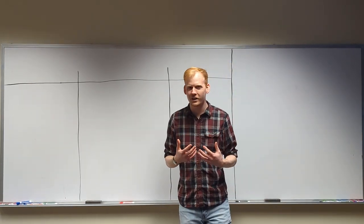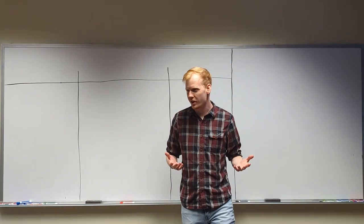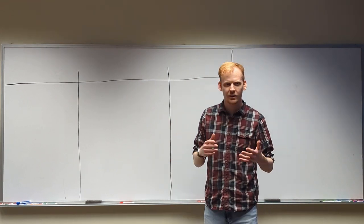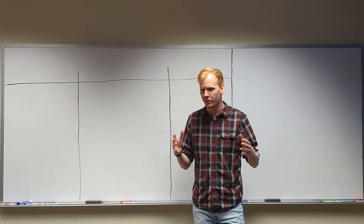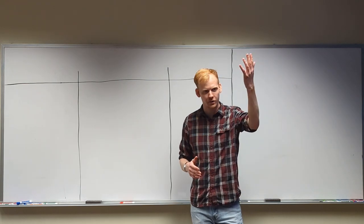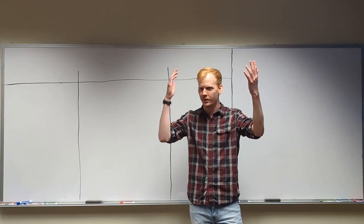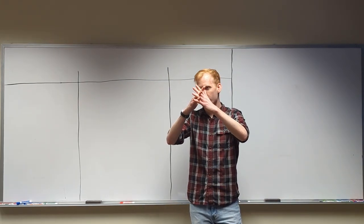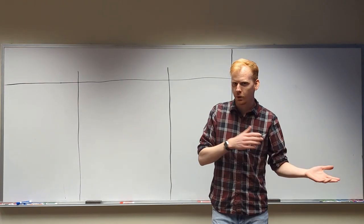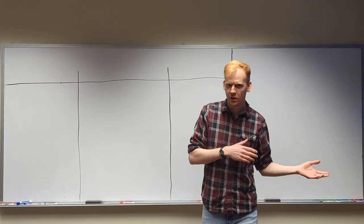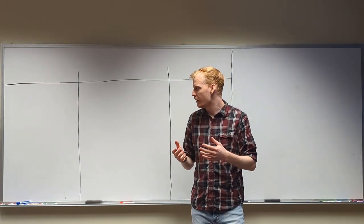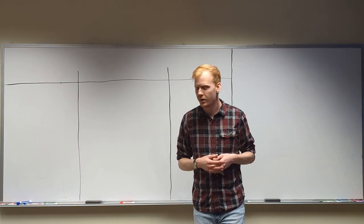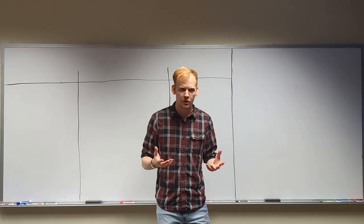For those that don't know, I work in intersection theory, which very broadly speaking studies the intersection of different objects. If I have an object here and an object here, what does their intersection look like? What separates one person in intersection theory from another is often what objects they are intersecting. In my case, it's pseudo-stable curves.